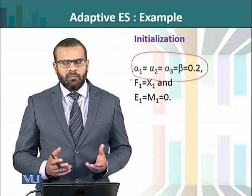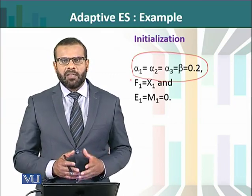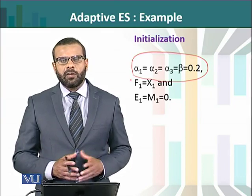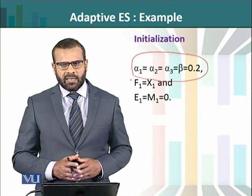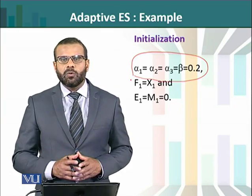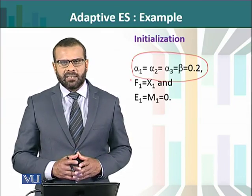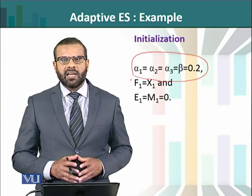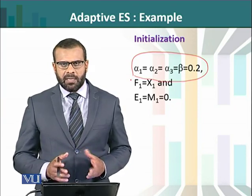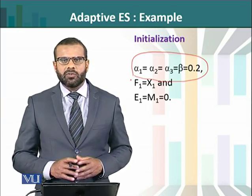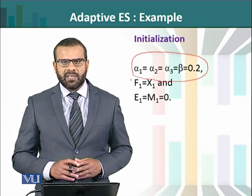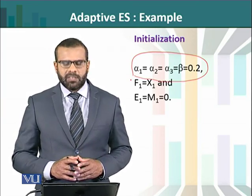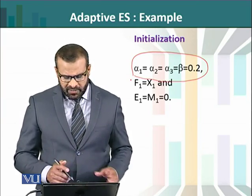A convention is to fix beta at the same value as the initial alpha. However, the value of beta can be changed and we can observe its effect. For the time being, we fix beta at 0.2, while alpha 1, alpha 2, and alpha 3 are also fixed at 0.2.